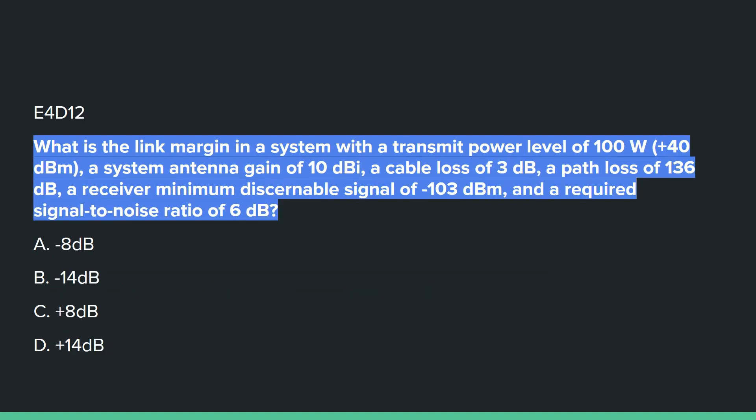E4D12: What is the link margin in a system with a transmit power level of 100 watts (plus 40 dBm), a system antenna gain of 10 dBi, a cable loss of 3 dB, a path loss of 136 dB, a receiver minimum discernible signal of negative 103 dBm, and a required signal-to-noise ratio of 6 dB?